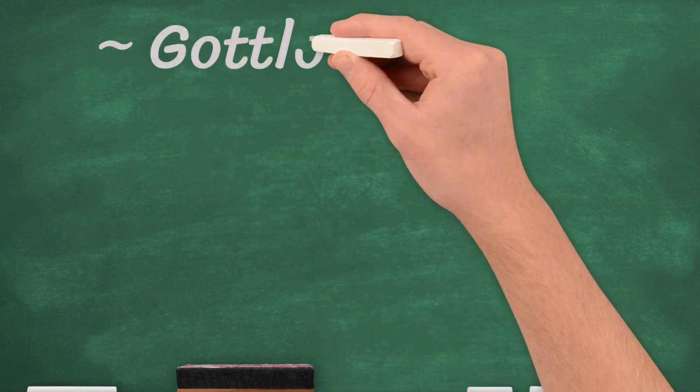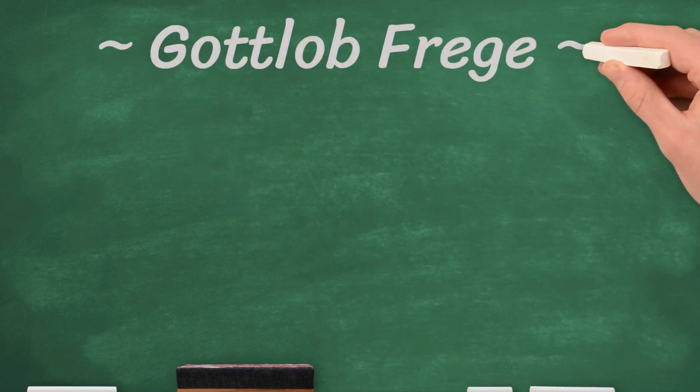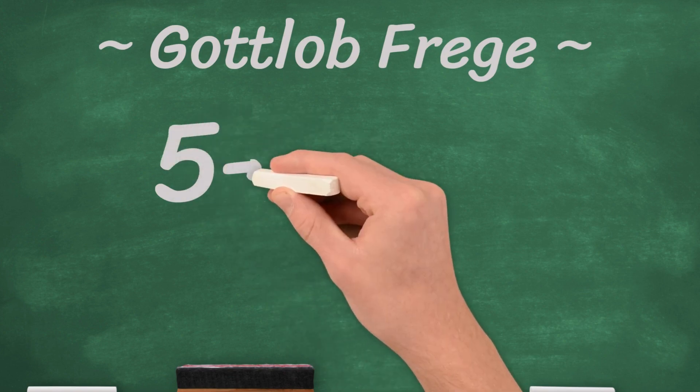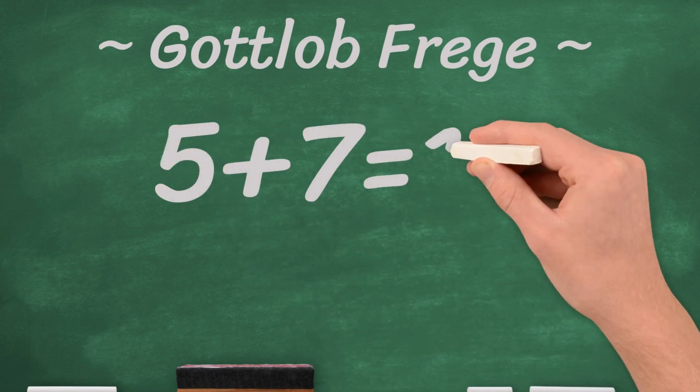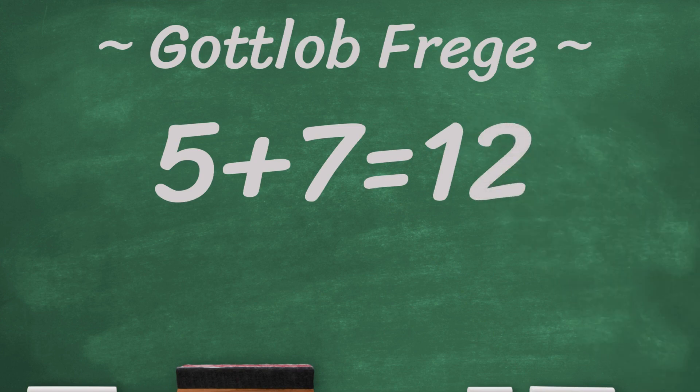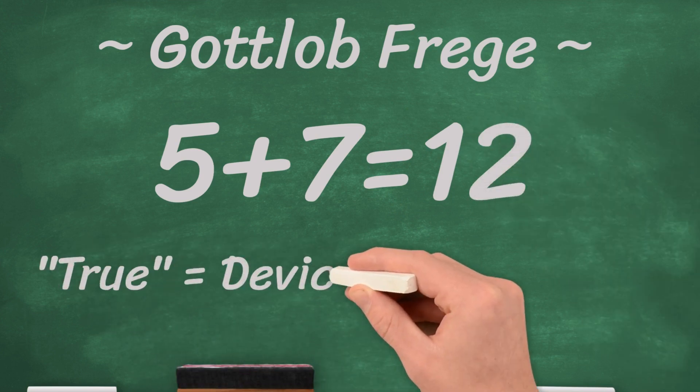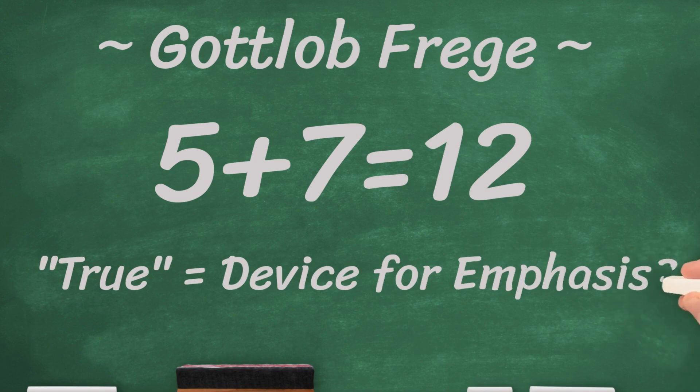Frege was a pivotal figure in logic and the philosophy of language. He observed the seemingly interchangeable nature of statements like 5 plus 7 equals 12 is true and 5 plus 7 equals 12. He reasoned that the term true might function solely as a device for emphasis.